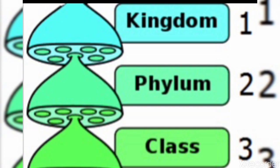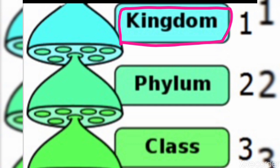Linnaeus classified all living organisms in two separate kingdoms: plant kingdom and animal kingdom. Kingdom is the largest unit of classification, whereas species is the smallest one. All living organisms are divided into two kingdoms — plants and animals. The next level of division in the plant kingdom is division, and in the animal kingdom the next level is phylum.